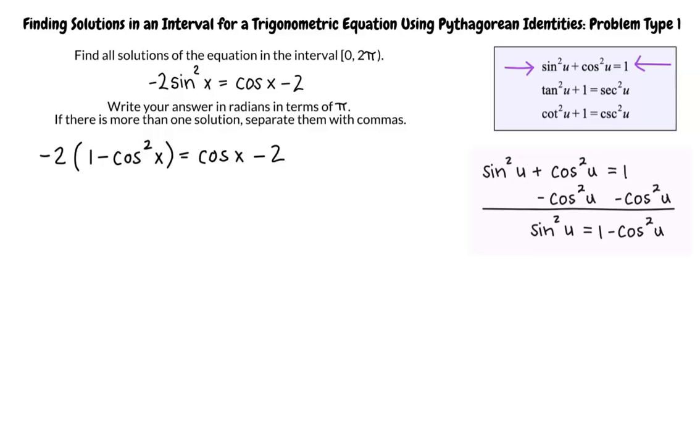Distributing -2 to 1 - cos²x, we write -2 + 2cos²x = cos x - 2. Adding 2 to both sides, we write 2cos²x = cos x.